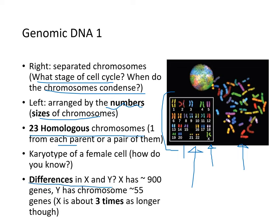The X chromosome has about 900 genes whereas the Y chromosome has about 30 to 55 genes, so X is about three times longer yet contains far more genes.